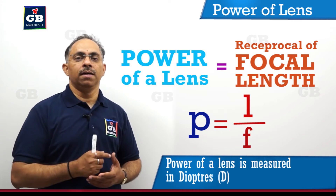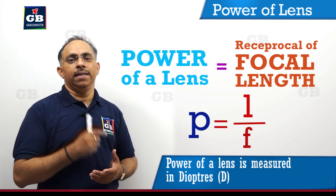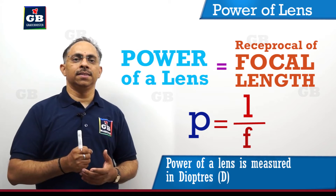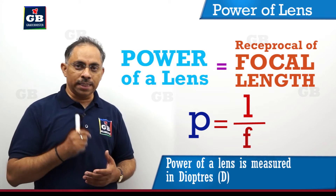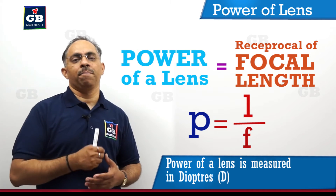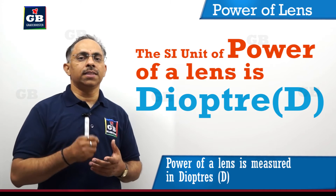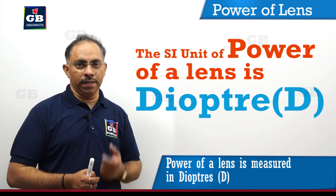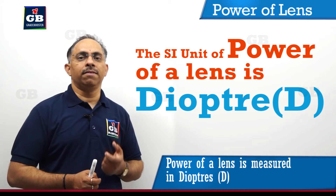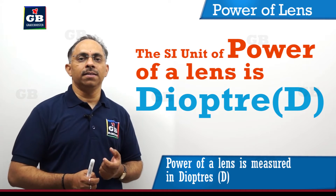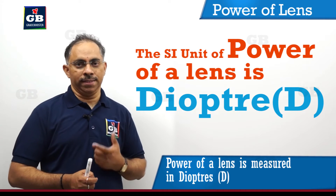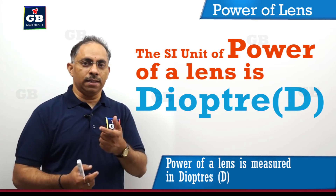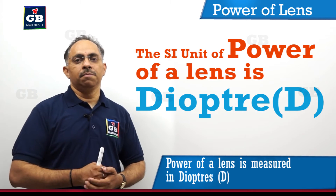Power P is equal to one divided by the focal length of a lens, where that focal length is expressed in meters. If we consider the unit of power of a lens, it will be per meter, because it is one by focal length with focal length expressed in meters.